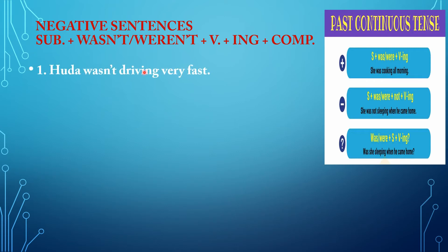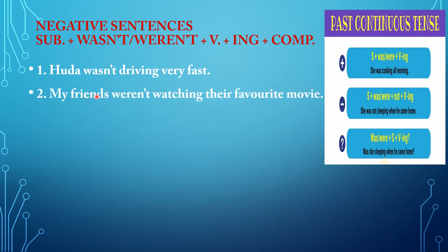For example: Huda wasn't driving very fast. Huda is the subject; wasn't is verb to be; driving is the verb with -ing and the complement. My friends weren't — my friends is the subject, which is plural, so it takes verb to be weren't, plus watch with -ing and the complement.